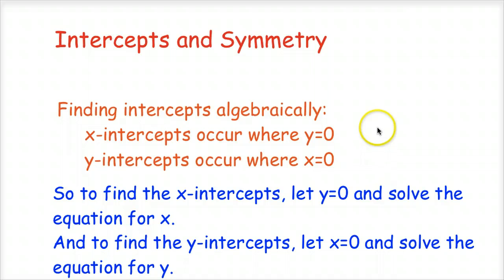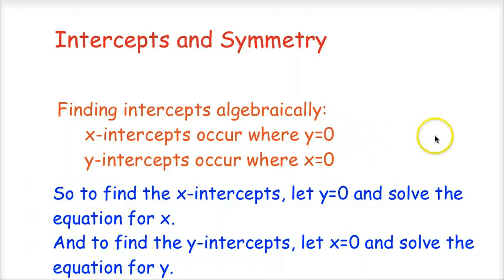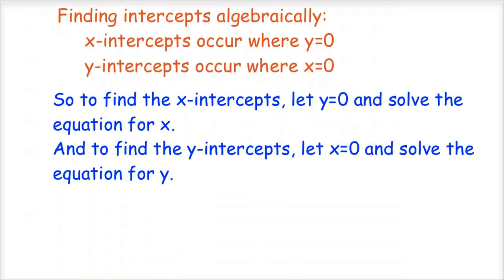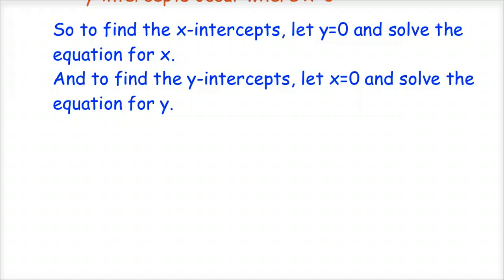In order to do that, we want to think back on what those points are where they cross the axis — what are the coordinates of those points? If a point is on the x-axis, or is an x-intercept, then the y-coordinate of that point is going to be 0. When the points are on the y-axis, the x-coordinate is 0. So to find the intercepts algebraically, we're going to let y equal 0 to find the x-intercepts and solve for x, and then let x equal 0 and solve for y to find the y-intercepts.